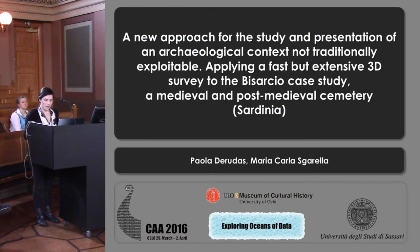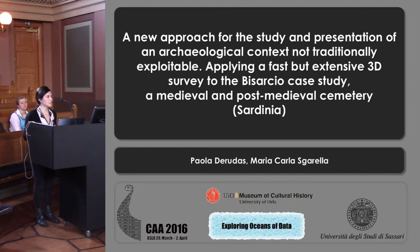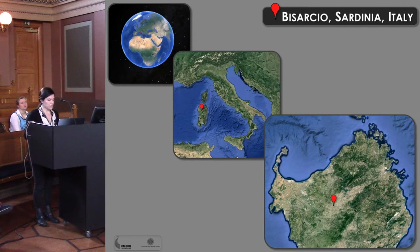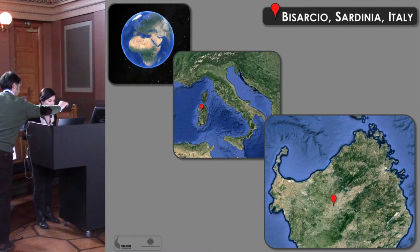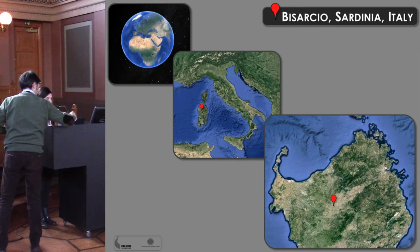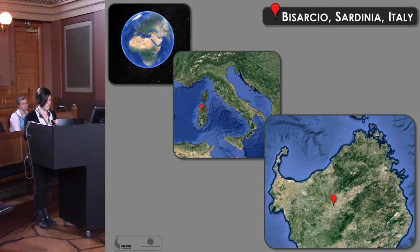Good morning. Our paper wants to illustrate an experimental case of a three-dimensional survey carried out as a tool to record a stratigraphically excavated sequence. The test case chosen is Bizarcio, a medieval and post-medieval site in north-central Sardinia. It is a very meaningful place with high strategic importance for the medieval history of the island, as since the 80s of the 11th century it was the diocesan seat and was a village inhabited until the first half of the 18th century. The cathedral and the bishop's citadel ruins are nowadays part of a cultural touristic route.